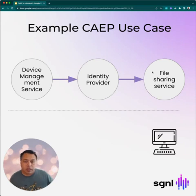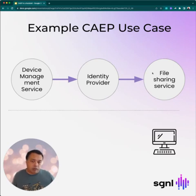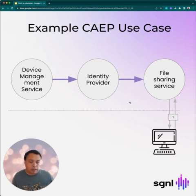Here's an example of how CAPE can be used. We have a device management service, an identity provider, and a file sharing service. They already have streams open between them via the Shared Signals framework, over which they're going to send CAPE events. The device management service is a transmitter to the identity provider, and the identity provider is a transmitter to many applications — one of them being the file sharing service. Now, let's say a user signs in to the file sharing service using the identity provider, and the policy is that access is only granted when their devices are managed.